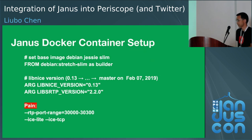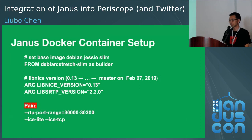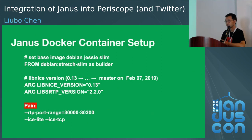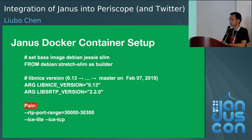Regarding the Janus container setup — Janus is a third-party open source project written in C. It opens UDP and TCP ports to the public, so we have very special security requirements. It needs to be isolated from other services on the same host, and it is not allowed to access our metadata service, which manages our secrets for accessing Redis and S3. That's why the network mode for the Janus Docker container is set to bridge mode instead of host mode.